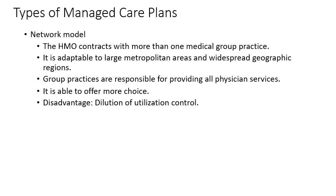The network model: the HMO contracts with more than one medical group practice. It is adaptable to large metropolitan areas like New York City and widespread geographic regions. Group practices are responsible for providing all physician services and are able to offer more choice. The disadvantage is there is a dilution of utilization control.